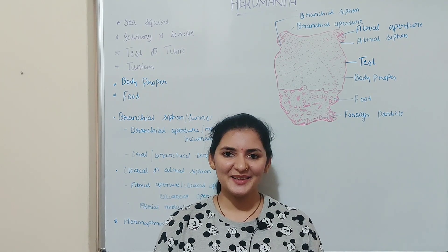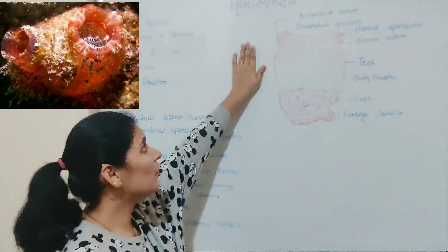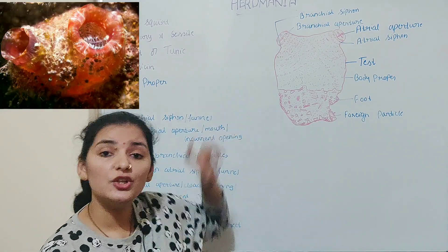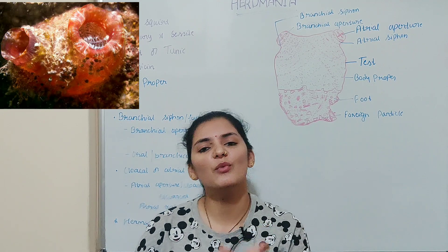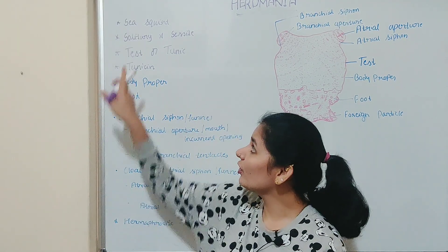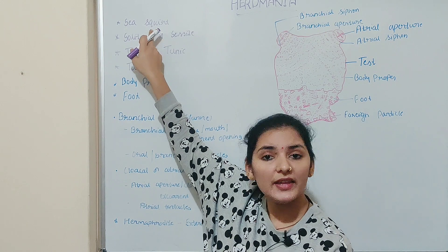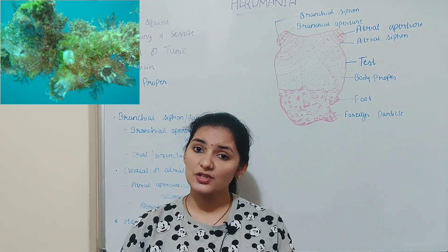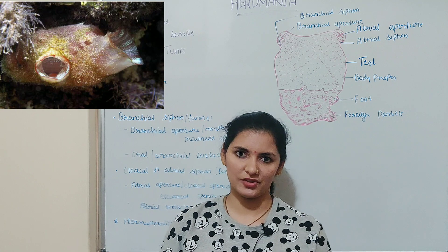Welcome back everyone. In this video I am going to talk about morphology or external features of Herdmania. Herdmania is a very primitive vertebrate, commonly called as sea squirt. They are exclusively marine organisms and mostly they are present in the shallow water region.